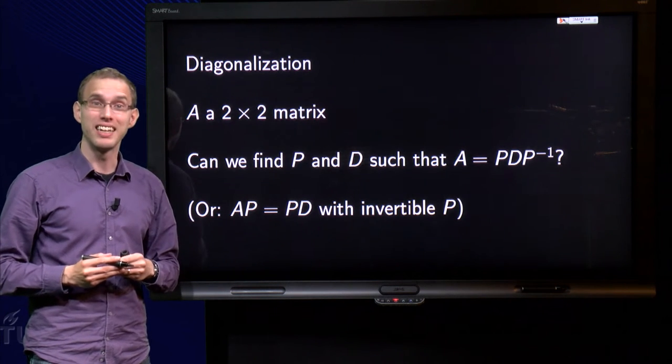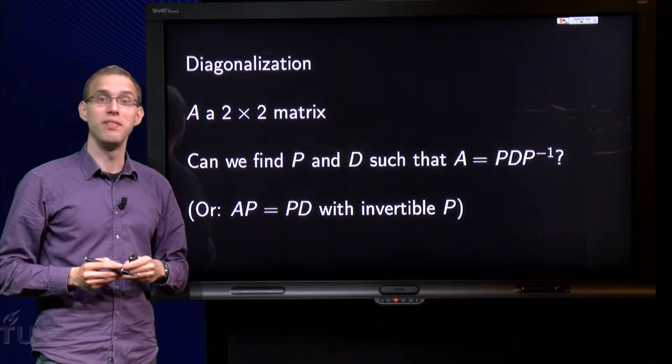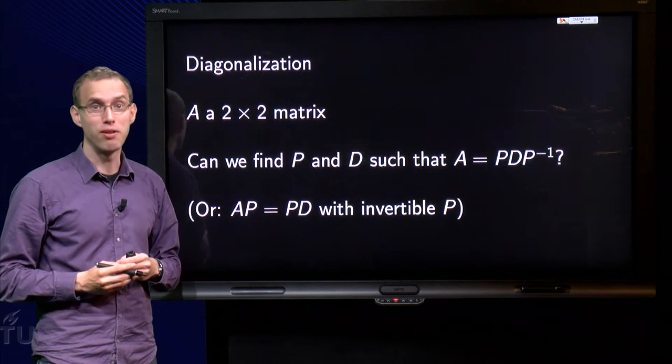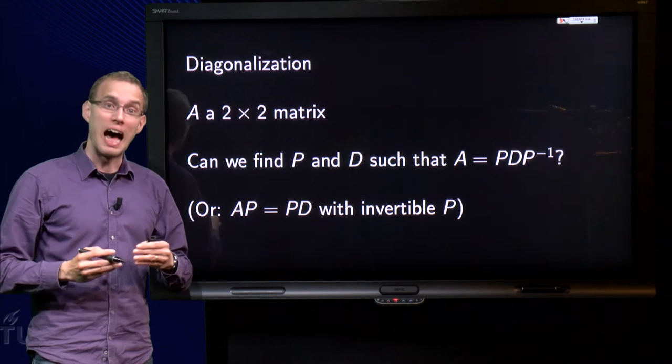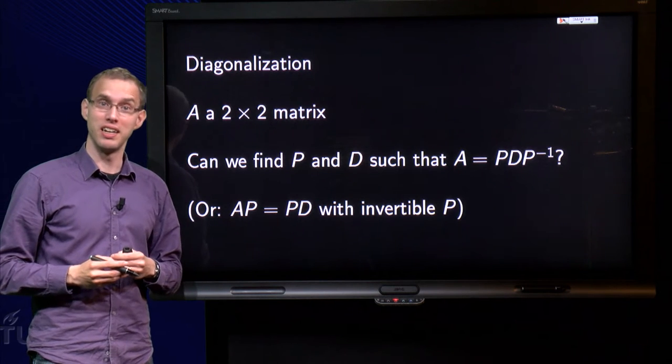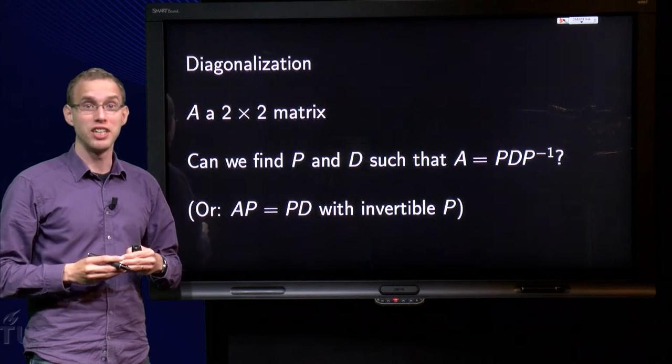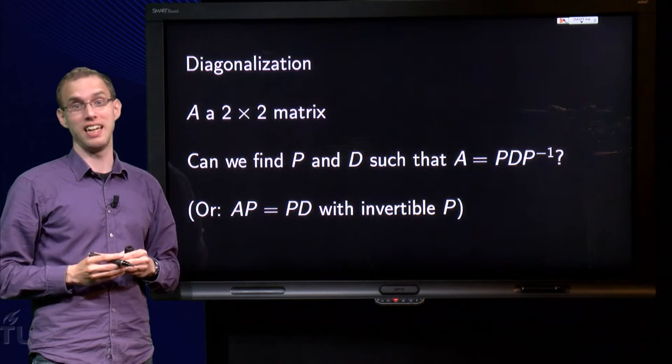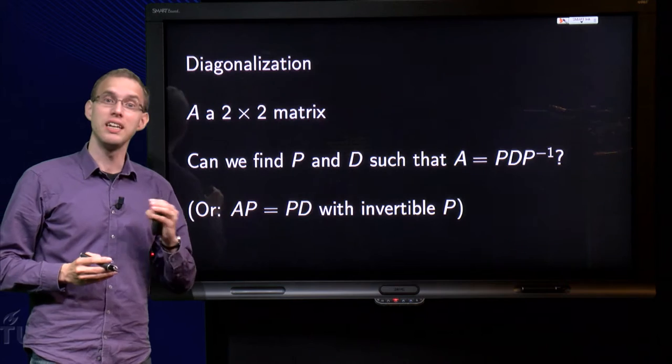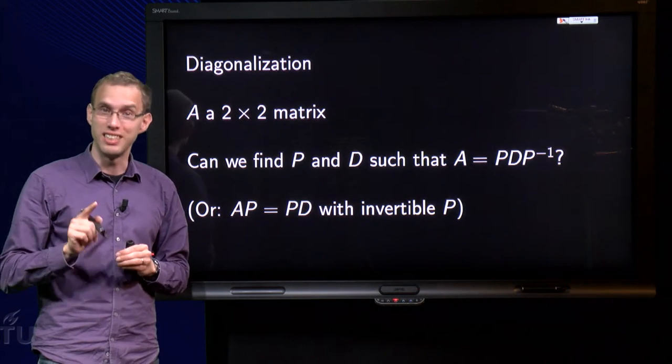If we can find a diagonalization of a matrix, we can easily compute higher powers of a matrix. But how can we find such a diagonalization? Can we find a diagonalization for every square matrix A? You'll see the answer to both questions in this video.